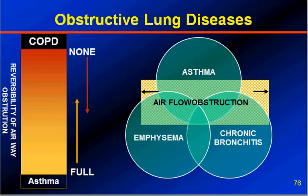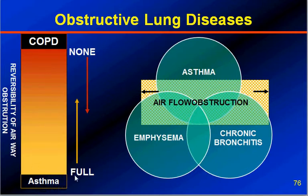Are COPD and bronchial asthma two diseases or one disease? It is a big question — there are two hypotheses. The Dutch hypothesis says they are two different facets of the same disease; the Swedish hypothesis says they are two different entities. Nonetheless, in asthma there is reversibility of airway obstruction, whereas in COPD there is very little reversibility. There is an area of overlap between COPD and asthma — from full reversibility to partial reversibility to no reversibility.